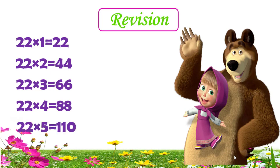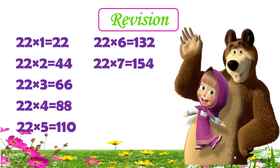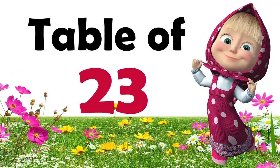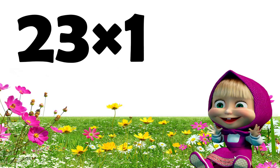22 fives are 110, 22 sixes are 132, 22 sevens are 154, 22 eights are 176, 22 nines are 198, 22 tens are 220. Now, table of 23.